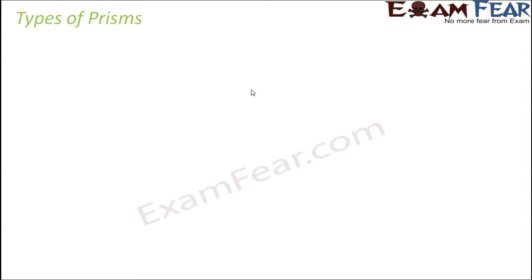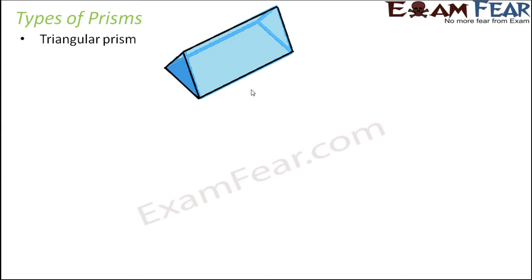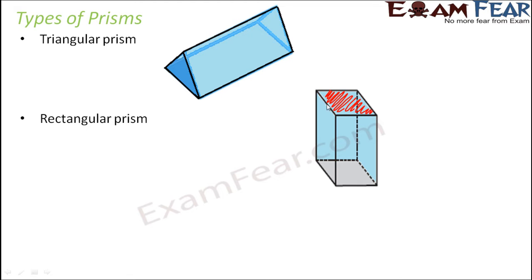So let us look at the types of prism. Triangular prism means the base and the top are triangles like this. If you talk about a rectangular prism, that means the base and the top would be rectangle. So in this case, if you see, this is the top and this is the base.